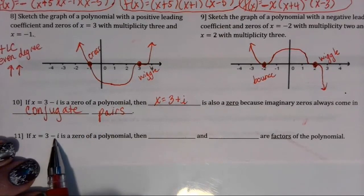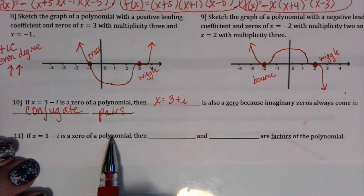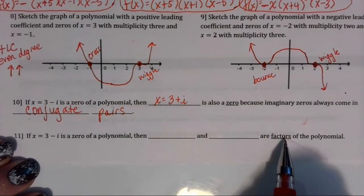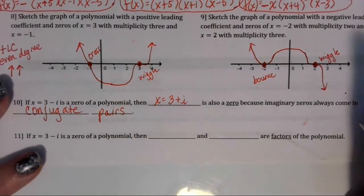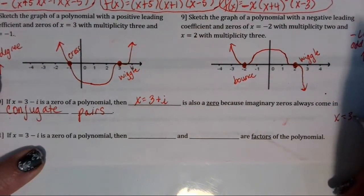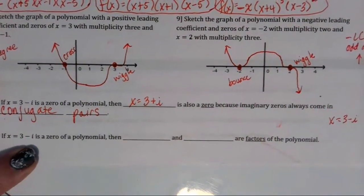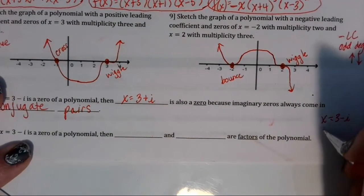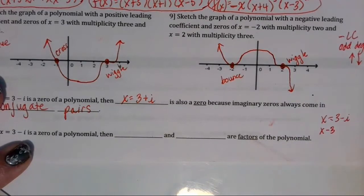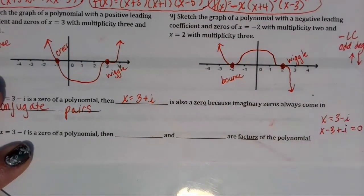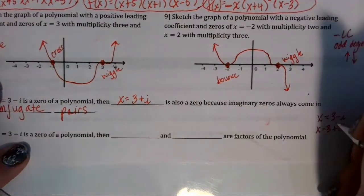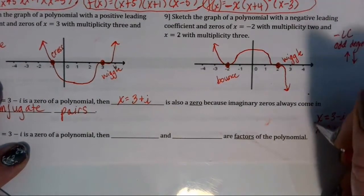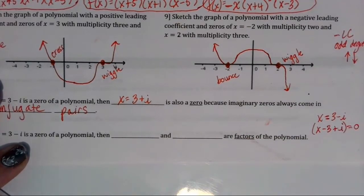If x equals 3 minus i is a zero of the polynomial, then to find the factors of the polynomial, I take that x equals 3 minus i, and I want to solve that for x. So I would subtract 3 and then add i to set it equal to zero. So I take my solution and then I get the factor by setting that equal to zero.